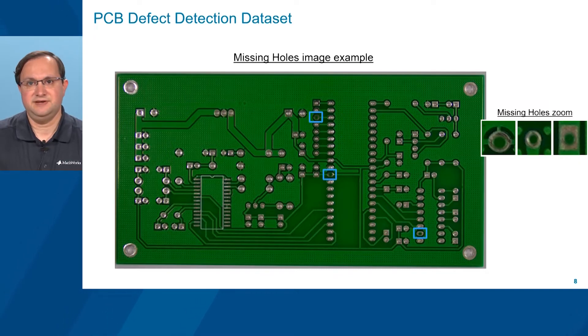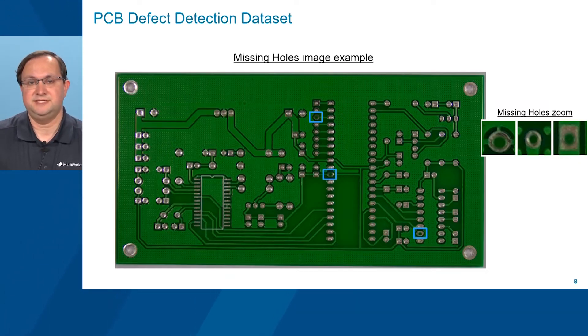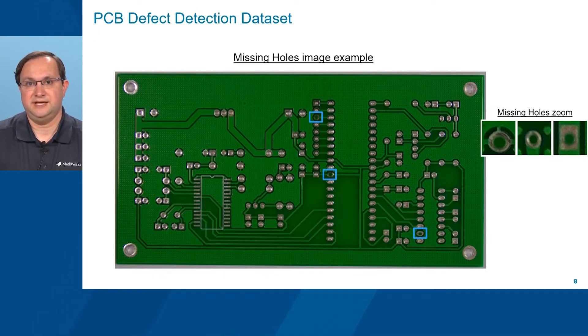The dataset's first defect class is missing holes, which correspond to missing solder bumps on the back of the PCB. You can see several examples of missing hole regions of interest annotated in blue.